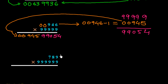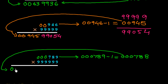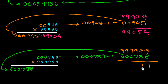Next example: multiply 189 by 999999. This is a 3-digit number and 999999 is a 6-digit series of 9s. First we add three zeros: 000189. Subtract 1 to get 000188, which goes on the left side. Subtract 000788 from 999999: we get 999211 on the right side. So the final answer is 188999211.